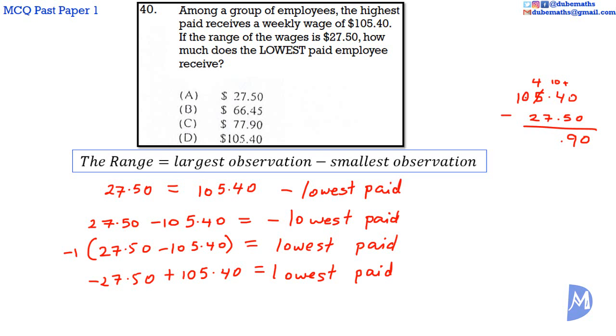Borrow 1 from the 10. Remain with 9. And again, 1 of these is equal to 10. So we add 10. 10 plus 4 is 14. 14 minus 7 equals 7. 9 minus 2 equals 7. You get $77.90.